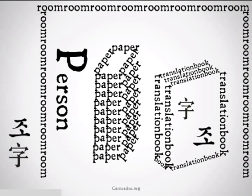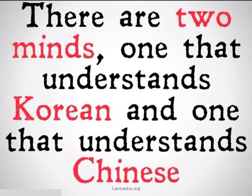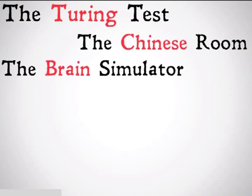Because we don't just have one consciousness, we seem to have two. We seem to be getting towards the point that it's not the person who knows it, but the whole system. Basically, there are two minds — one that understands Korean and one that understands Chinese — neither of which seem to be understanding English. So it has nothing to do with what's going on in the person's mind, but rather the mind of the whole system.